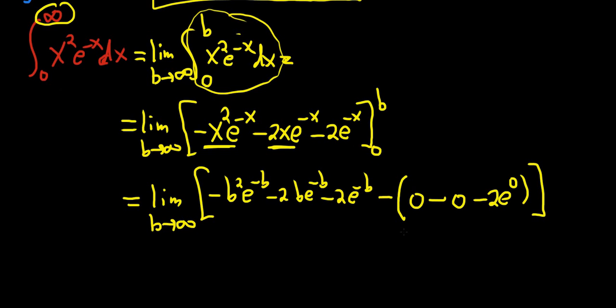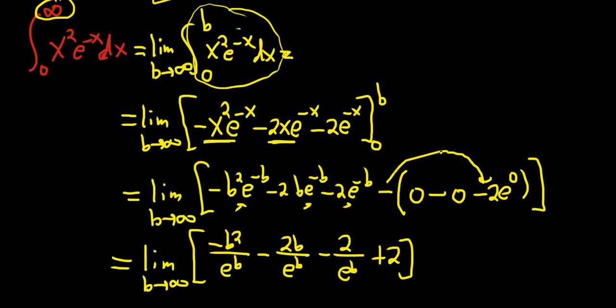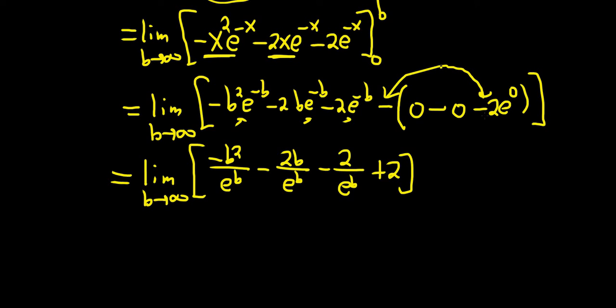Let's go ahead and rewrite this in a more familiar way. This is the limit as b approaches infinity. So now what you can do is you can bring all of these e's downstairs. This will be bracket -b²/e^b - 2b/e^b - 2/e^b and then +2. The +2 comes from the multiplication here, right, the negative 1 and the negative 2.